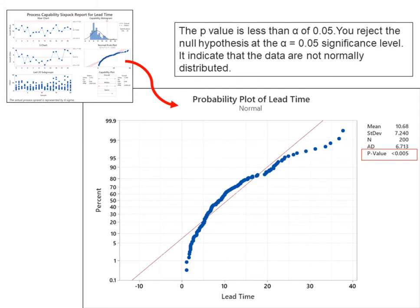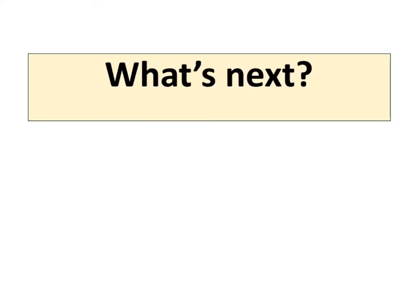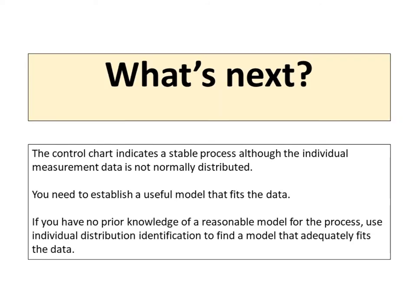As mentioned previously, the null hypothesis for normality test is that data follow a normal distribution, while the alternative hypothesis is that data do not follow a normal distribution. The p-value is less than 0.005. Assuming the level of significance alpha is 0.05, since the p-value is less than alpha of 0.05, we reject the null hypothesis and conclude with 95% confidence that the data is not normally distributed. The control chart indicates a stable process although the individual measurement data is not normally distributed.